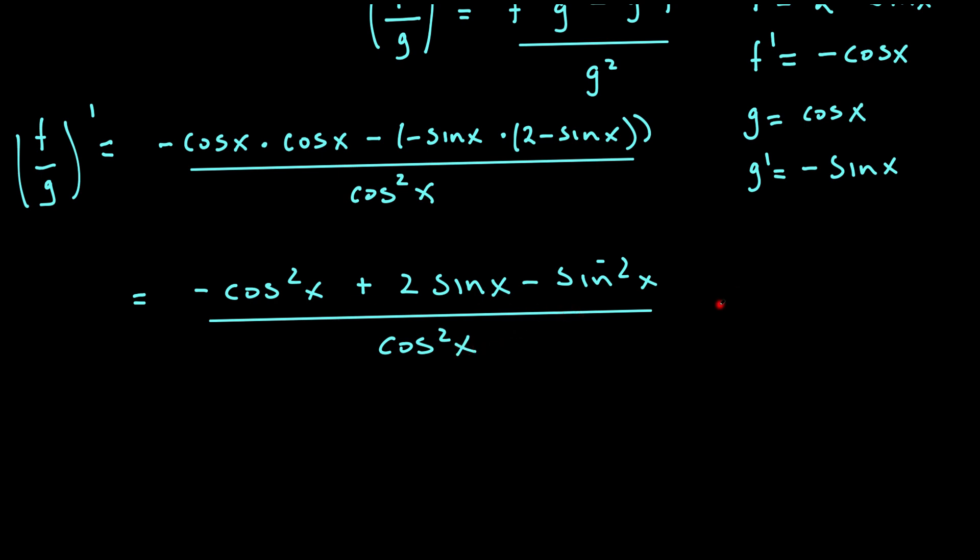Now I'm going to use this identity, and this would simplify down to (2sin x - 1) / cos²x.